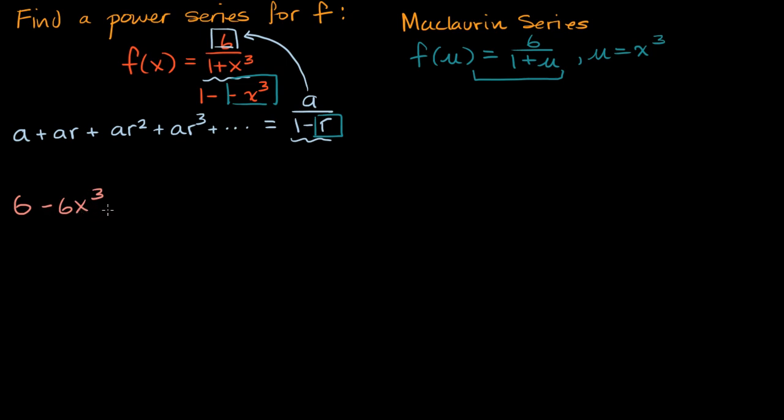And then we're going to multiply by -x³ again. So if I multiply this times -x³, that's going to be positive 6x⁶. And then I'm going to multiply by -x³ again. So it's going to be -6x⁹.